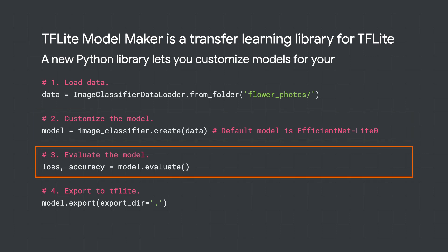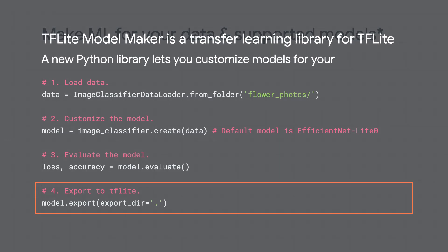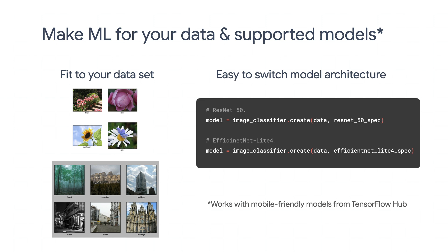After training the model, you can evaluate it, and finally export it in the TensorFlow Lite format. In on-device machine learning, you have to constantly make a trade-off between accuracy, inference speed, and model size. That's why we want you to not just customize models for your data, but also be able to easily switch between different model architectures. As you can see in this code sample, you can easily switch by choosing to use either ResNet or EfficientNet by just changing one parameter.